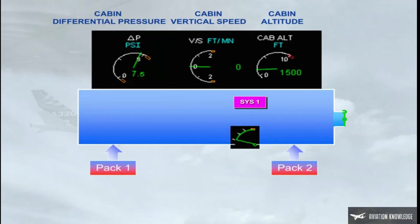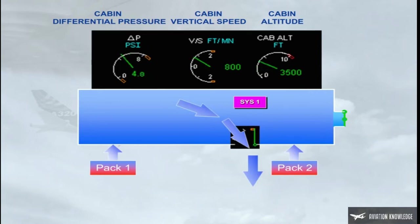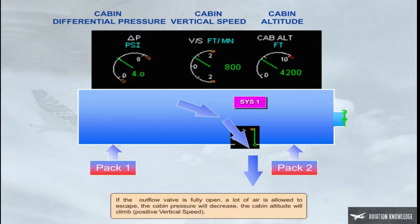If the outflow valve is fully open, a lot of air is allowed to escape. The cabin pressure will decrease, the cabin altitude will climb — positive vertical speed.